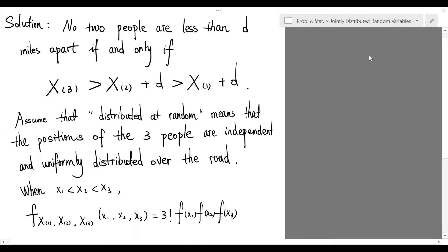Consequently, the joint density function for the order statistics is just 3 factorial times f of x sub 1 times f of x sub 2 times f of x sub 3. But f is simply the constant function 1.